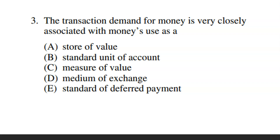There are several functions of money: store of value, unit of account, and medium of exchange. The transaction demand for money means you need money so you can spend it — for instance, if you're going out and spending money in various places, you'll need cash with you. Though 'money' here doesn't necessarily refer to cash; it refers to M1. The answer is D — it's closely associated with the medium of exchange.